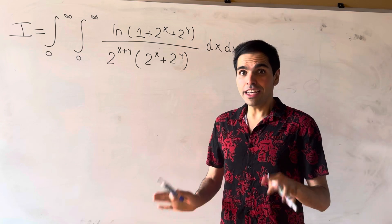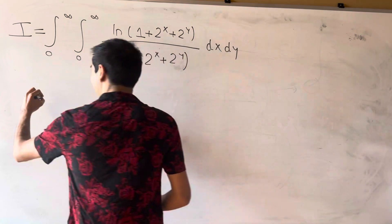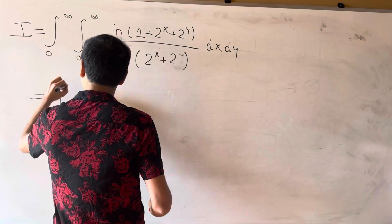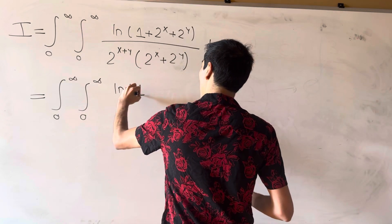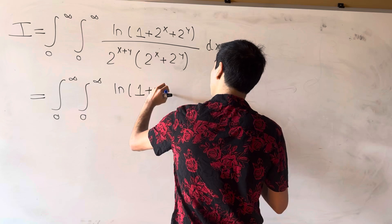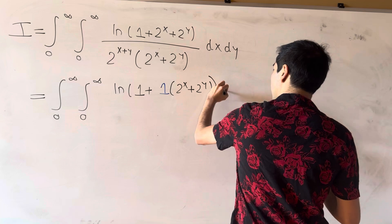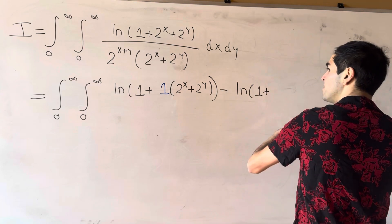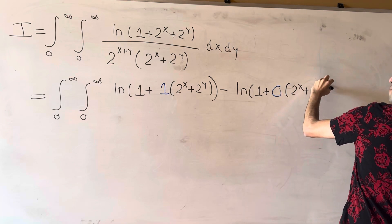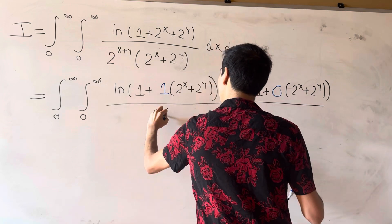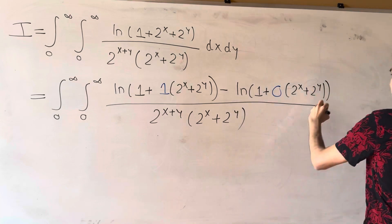What we'll do first is convert this into a triple integral — because we are crazy like that. This is the same as a double integral of ln of (1 + 1·(2^x + 2^y)) minus ln of (1 + 0·(2^x + 2^y)), all over 2^(x+y) times (2^x + 2^y) dx dy.